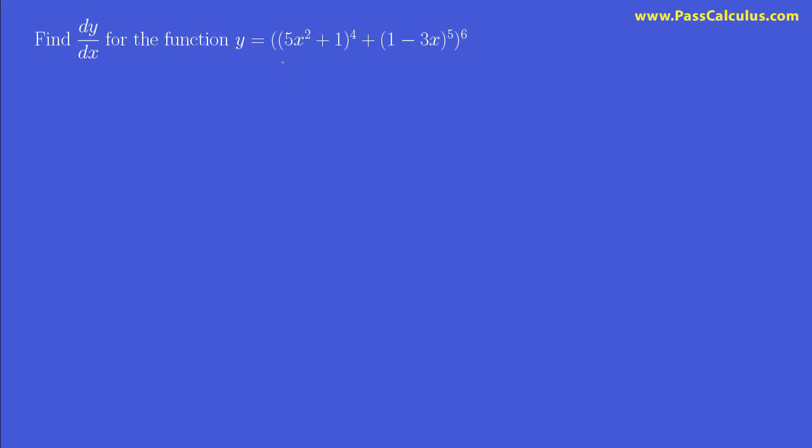Then we could do the derivative term by term and we wouldn't have to use the chain rule. But of course that is not the way to approach this. We want to use the chain rule, it'll make things so much easier.